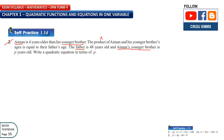Let's break down the information. Father is 48 years old. Ayman's younger brother is P years old. Ayman — I'll give him the symbol A. Since Ayman is four years older than his younger brother, Ayman's age is a bigger number, so P plus 4 equals Ayman's age. Equivalently, Ayman minus 4 gives the brother's age — both mean the same thing.